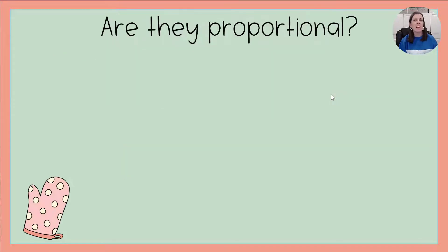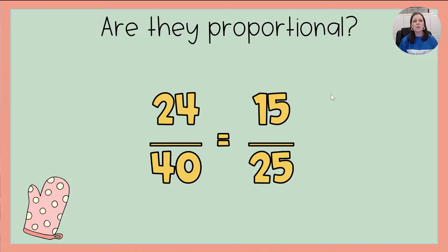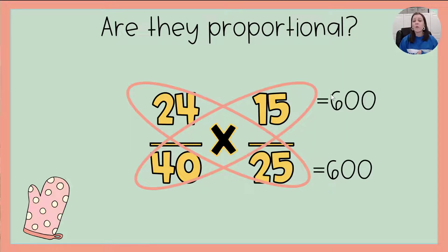What do I mean by that? Well, let's take a look at another example here, 24 to 40 and 15 to 25. I'm going to cross multiply. So that means I'm going to take the numerator of one and the denominator of the other and multiply. 24 times 25 is 600. Then I will go the other way, 40 times 15 is also 600. Since they both equal the same, that means yes, they are proportional.